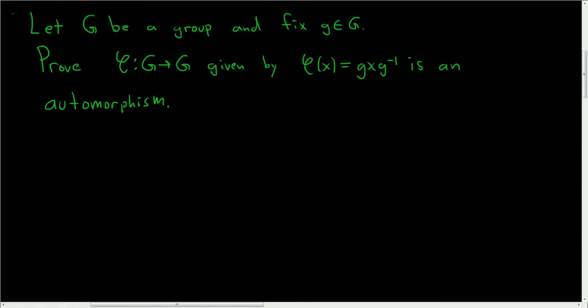Let G be a group and fix little g in capital G, and we want to prove that this map φ is an automorphism.